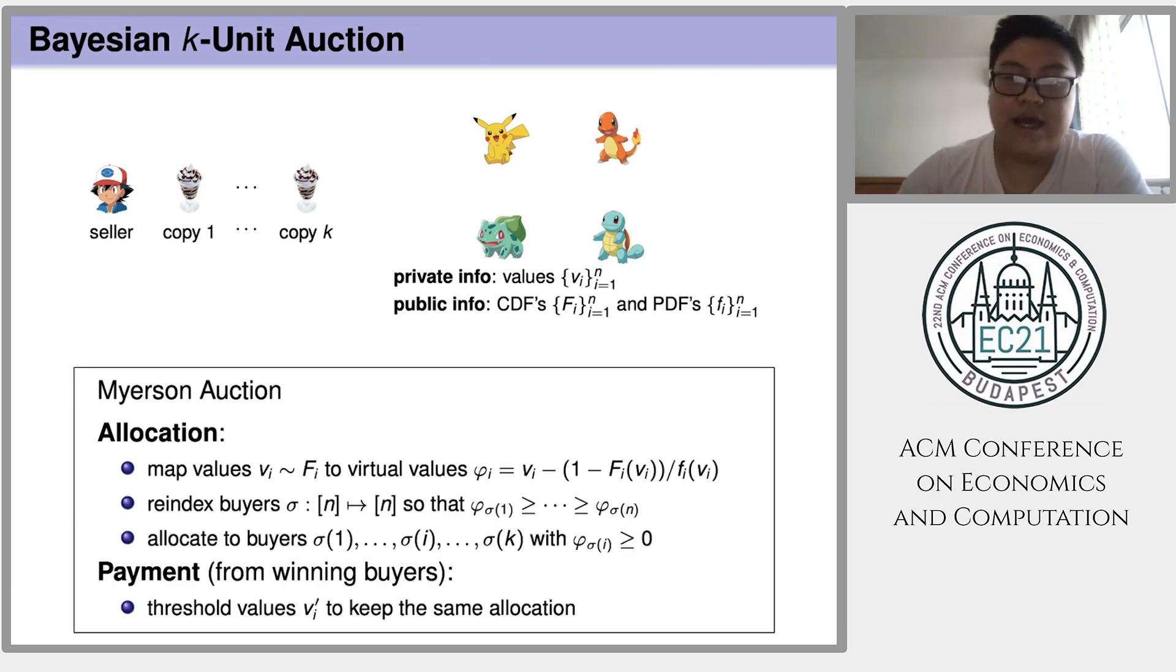It is well known that in this setting, Myerson Auction is the revenue optimal mechanism. Recall that Myerson Auction runs in this way. First, based on the virtual value function, it maps every buyer's true value VI to the virtual value.